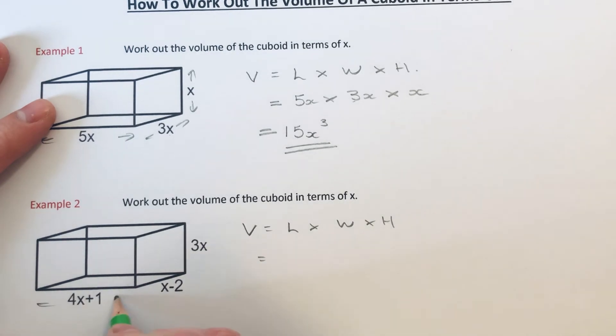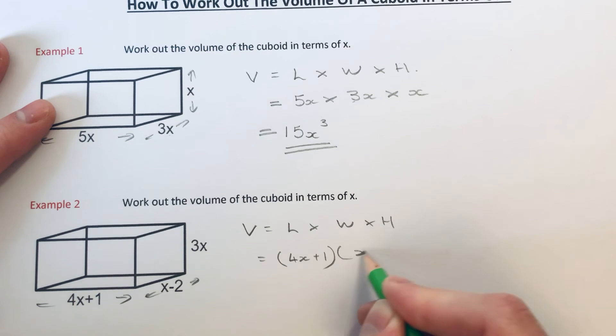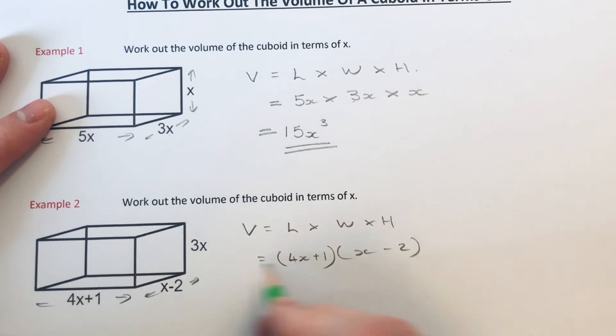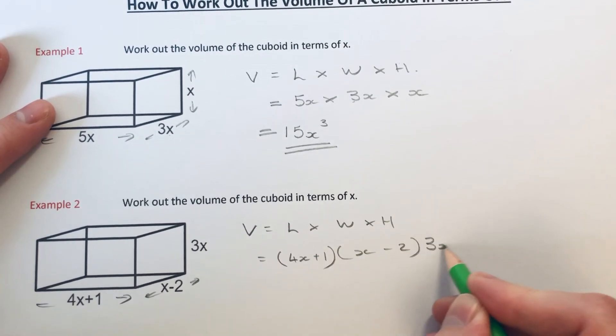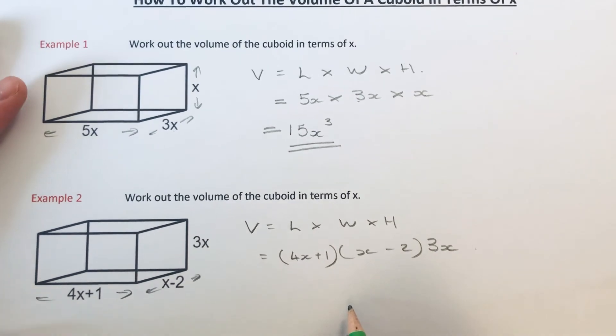Our length of the box is 4x plus 1. I'm going to put this in a bracket because it's two terms. The width of the box is x minus 2. Again, let's put that in a bracket. And the height of the box is 3x.